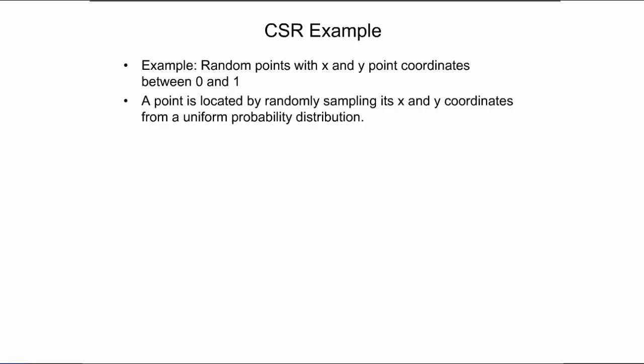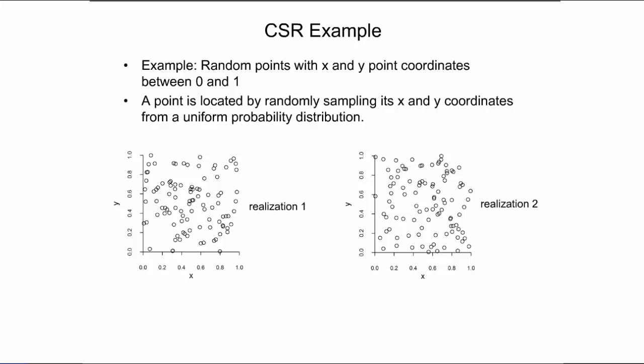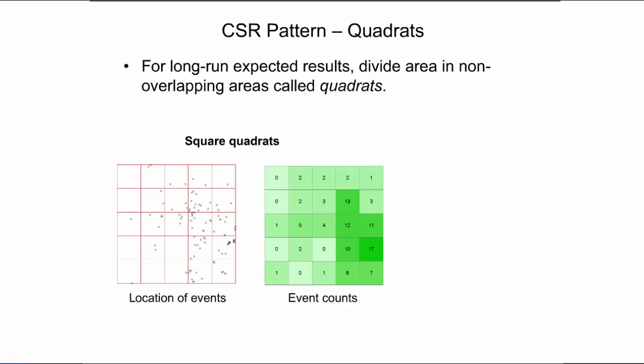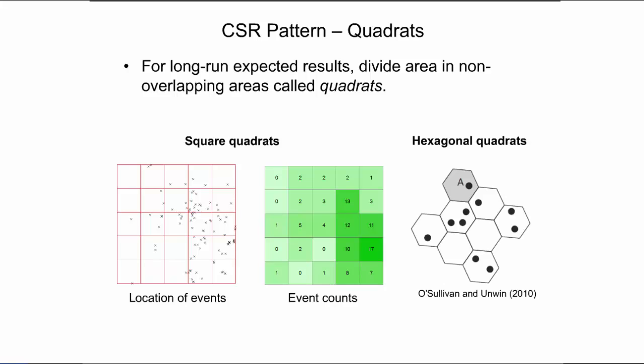This procedure can be repeated 100 times for a total of 100 points. These maps show two realizations of the described process. Due to the random nature of the process, each map will look different. One can also characterize the long-run expected outcome mathematically by dividing the study area into equal-sized and non-overlapping areas called quadrats. The figure on the left uses square quadrats to show the location of events, the middle figure depicts the number of events in each quadrat, and the right figure uses hexagonal quadrats to show the location of events.